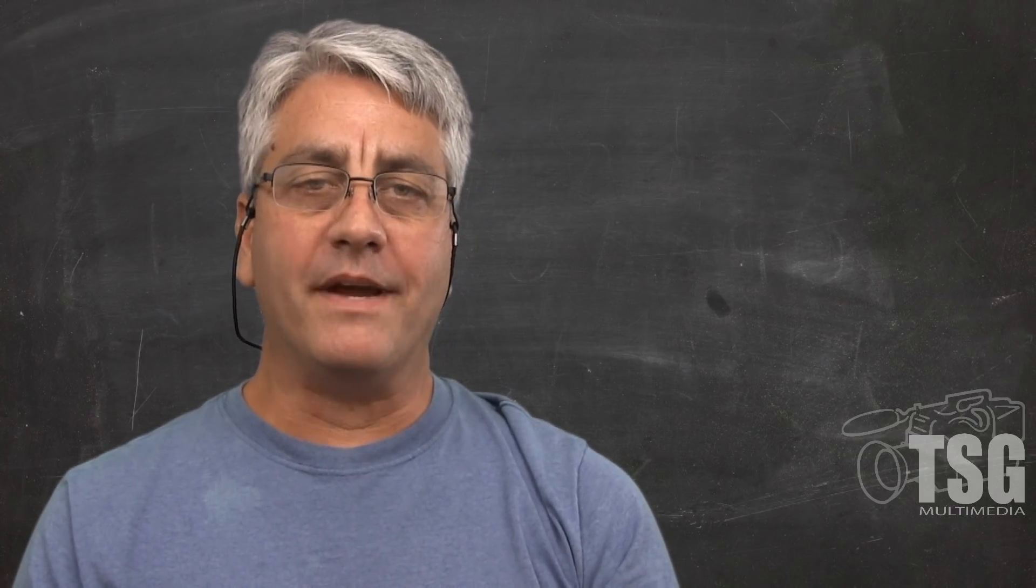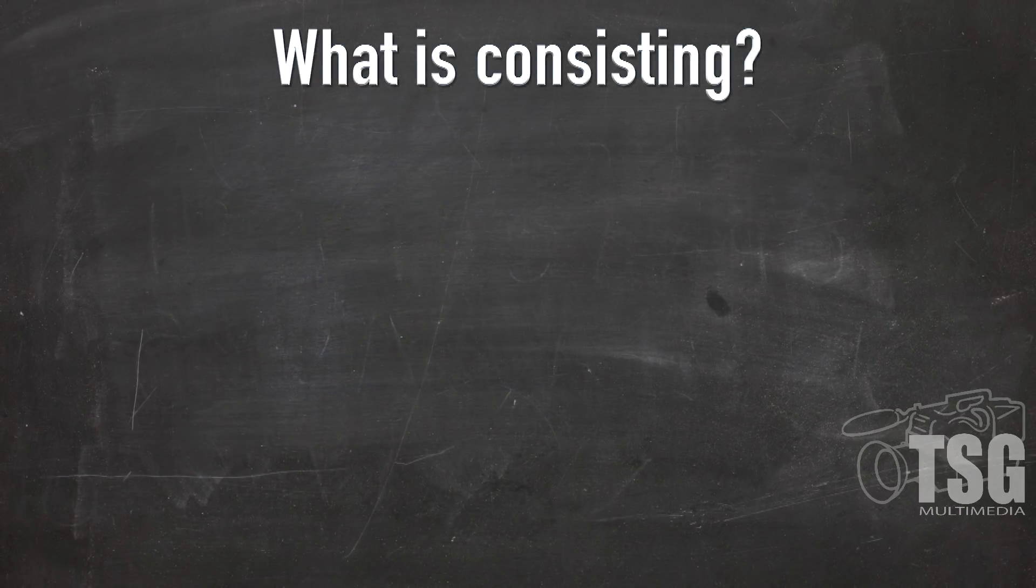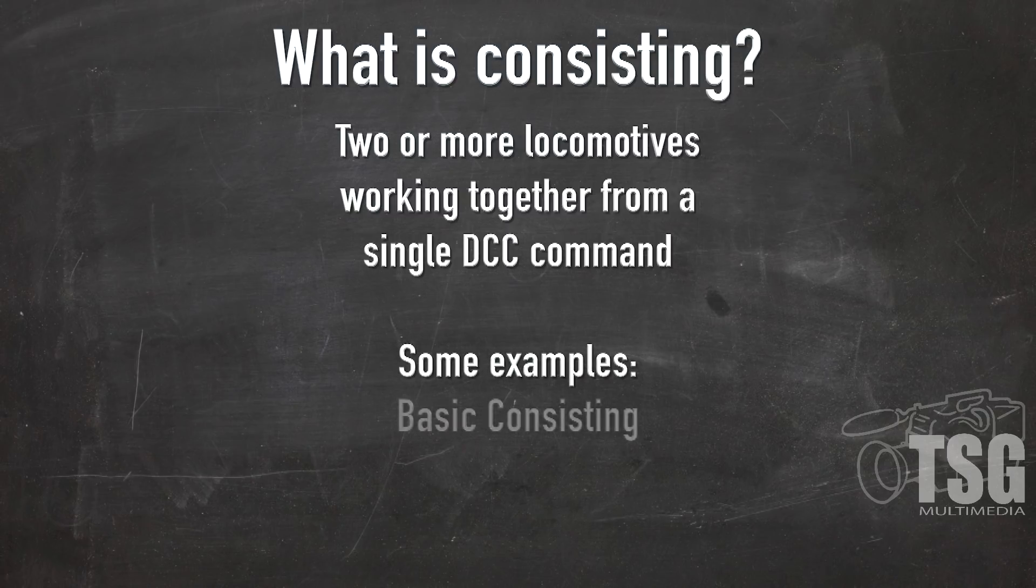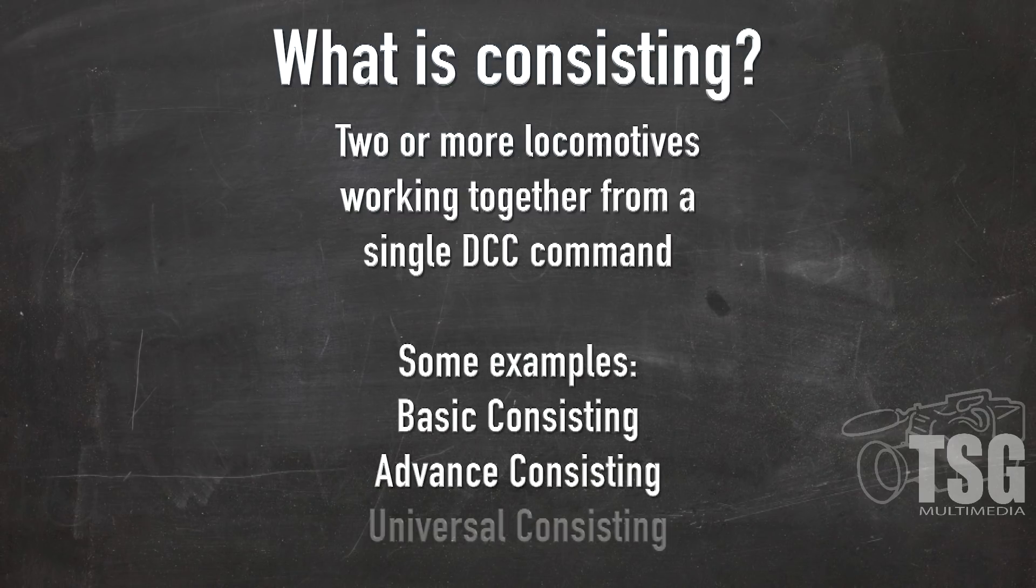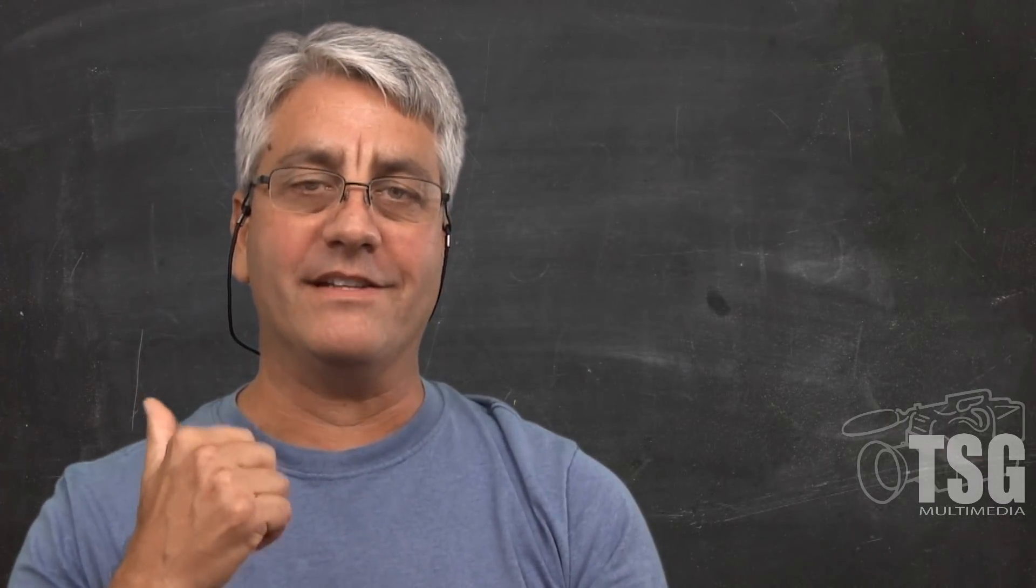Before we go to the workbench, let me explain what consisting is. Consisting is simply a term used in model railroading that refers to two or more locomotives working together. There's more than one way to do it. The difference has to do with how the decoders in the locomotives deal with the DCC commands being issued. Again, that's not really what we're here for today. So are you ready? Let's go to the workbench.